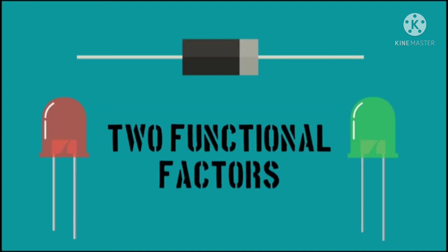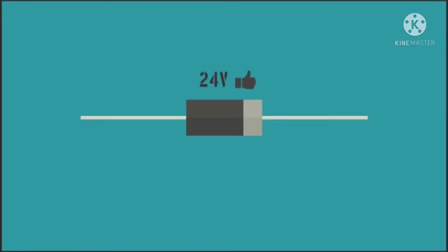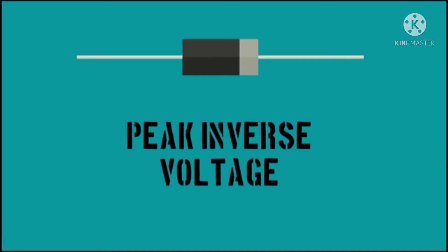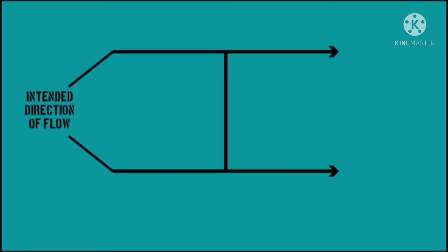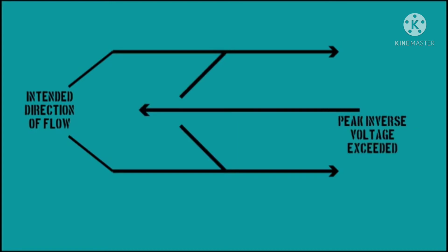Diodes have two main functional factors. The first is the maximum current that the diode can handle in a circuit. It is essential to use a diode with adequate capacity, or else the diode will fail. The second factor is the peak inverse voltage. This refers to the maximum voltage that can be applied in the reverse direction. When this voltage is exceeded, the diode will break down and allow current to move in the incorrect direction.